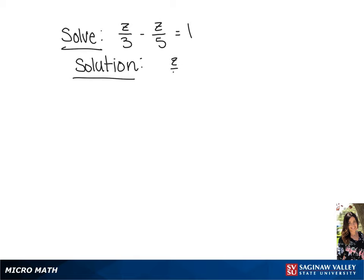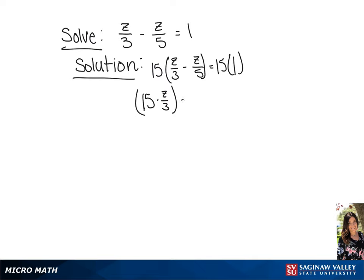We have the equation z over 3 minus z over 5 equals 1. We're going to start by clearing the fractions by multiplying each side by 15. This is going to give us 15 times z over 3 minus 15 times z over 5 equals 15.